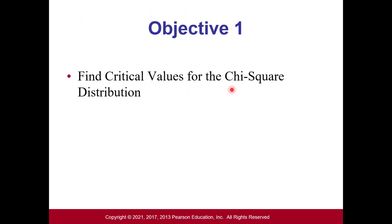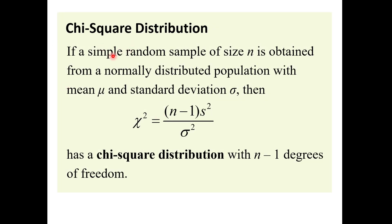First we're going to find critical values for the chi-square distribution. A chi-square distribution is the following: if a simple random sample of size n is obtained from a normally distributed population where the mean is mu and the standard deviation is sigma, then chi-squared equals n minus one times the sample standard deviation squared over the population standard deviation squared. This has a chi-square distribution with n minus one degrees of freedom.